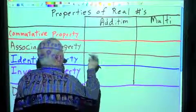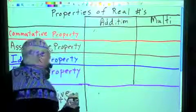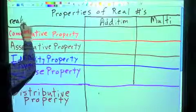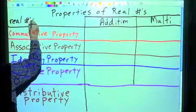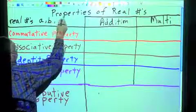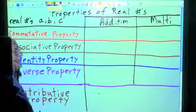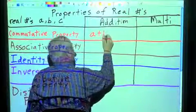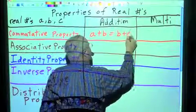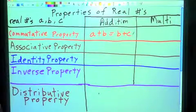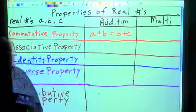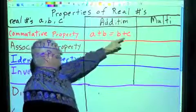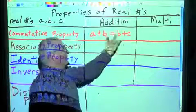So for addition, the commutative property is going to look something like this. For real numbers A, B, and C, if we have A plus B equals B plus A — commutative. It means we can change the order. Something has to move. When we're adding two numbers together, it doesn't matter which order they're in. We can move the order.